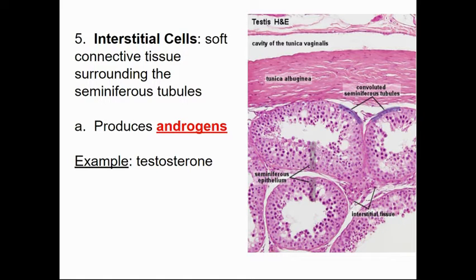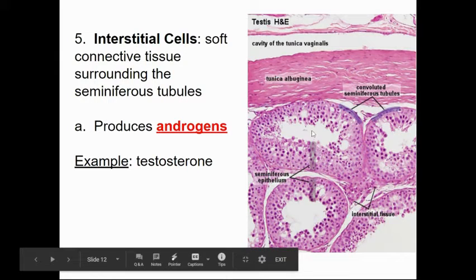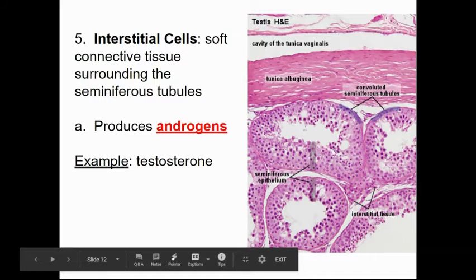The testis has endocrine and exocrine functions. The exocrine function is what we just discussed — producing sperm within a set of tubing. The endocrine function is when testosterone is made and distributed into the blood supply. The interstitial cells do that — they produce androgens, or male sex hormones. In stained tissue, you can see seminiferous tubules, their hollow lumen, and between the tubing is the interstitial tissue that produces testosterone, while the tubules produce the sperm.